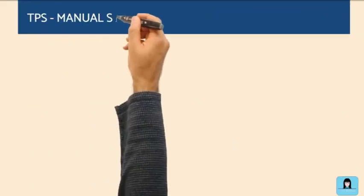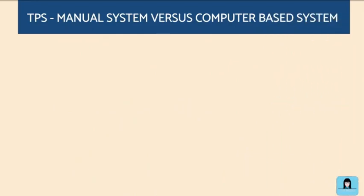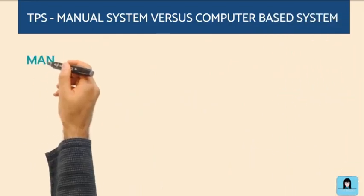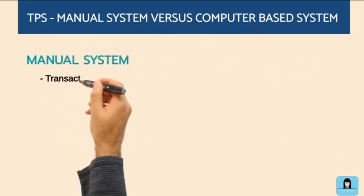How does TPS work in a manual accounting system versus a computer-based accounting system? In a manual system,